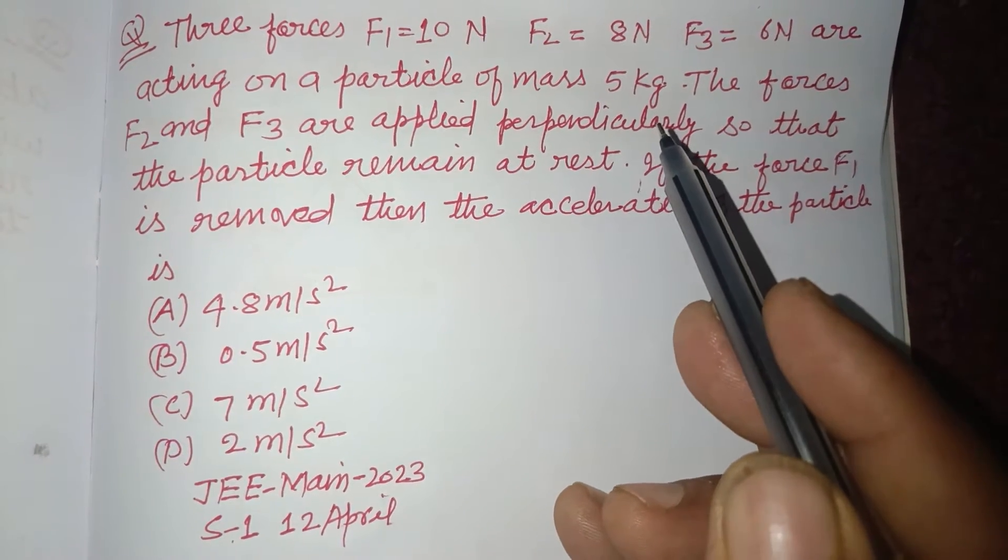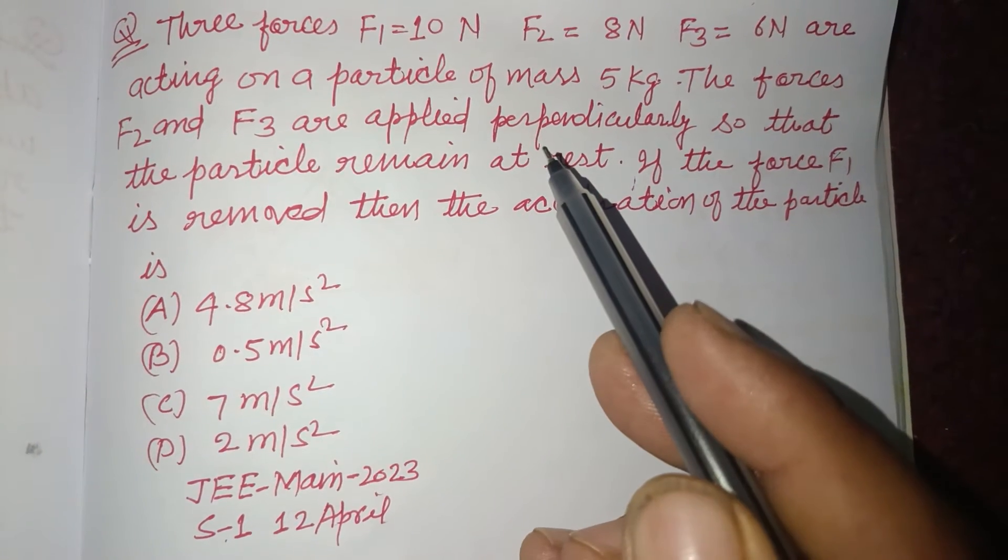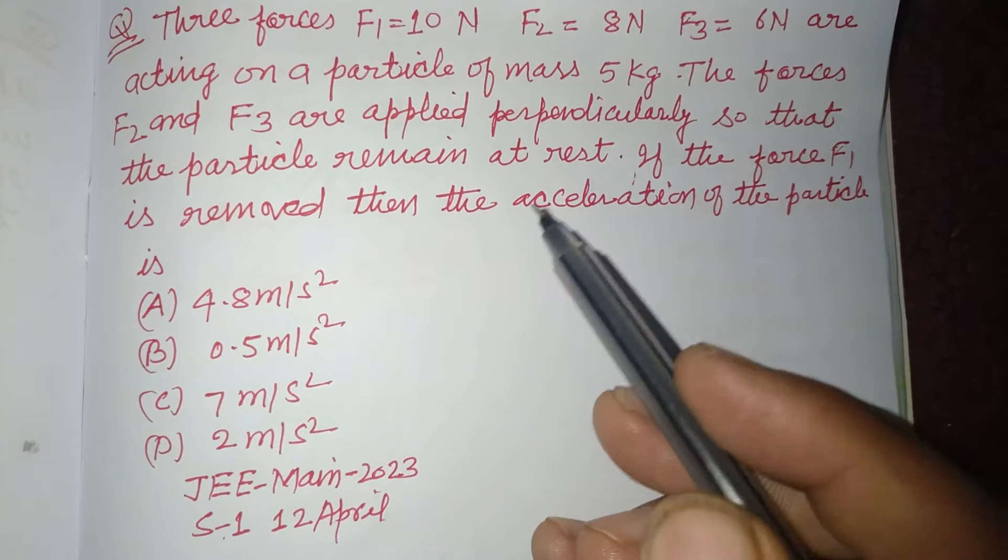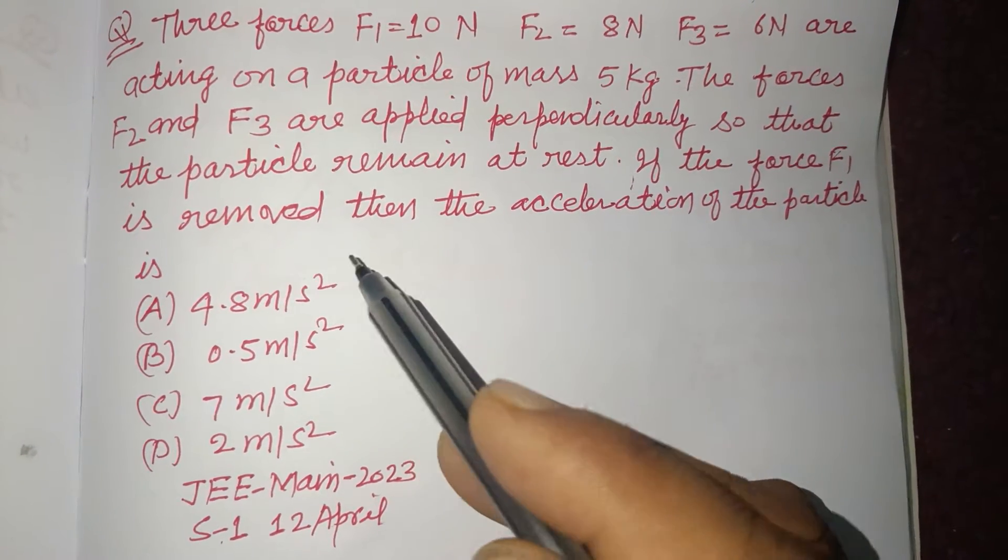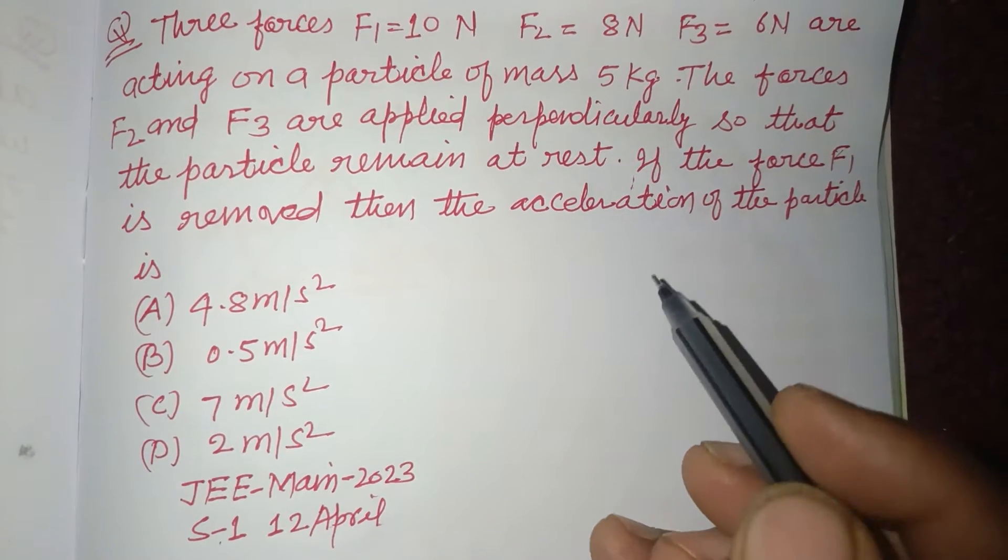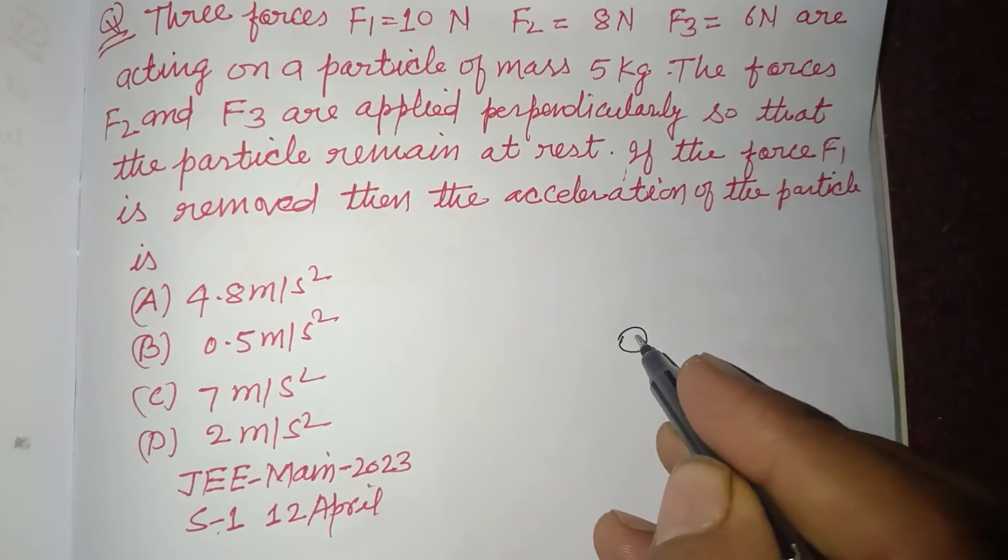of mass 5 kg. The forces F2 and F3 are applied perpendicular so that the particle remains at rest. The force F1 is removed, then the acceleration of the particle is? So students, it is a particle of mass 5 kg